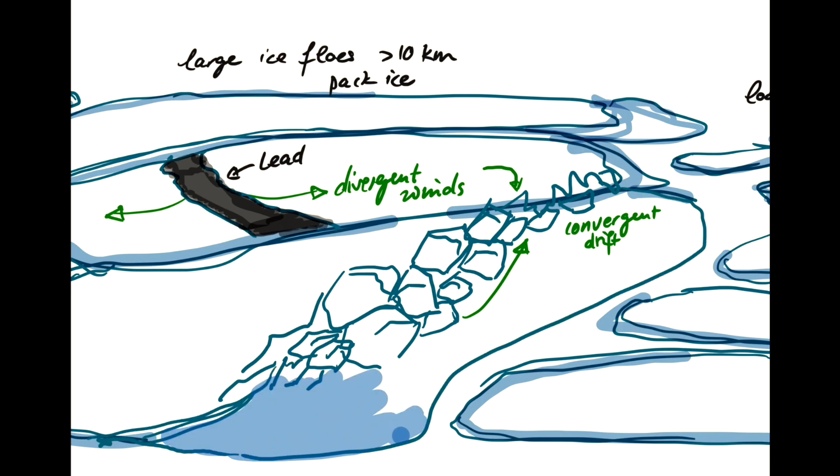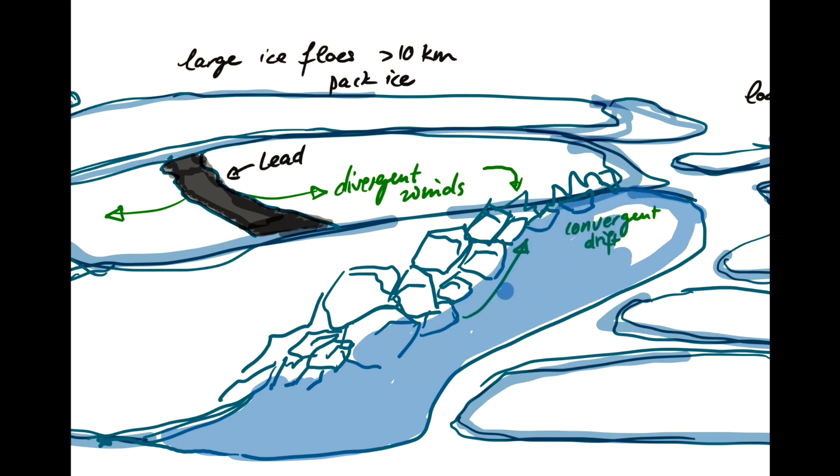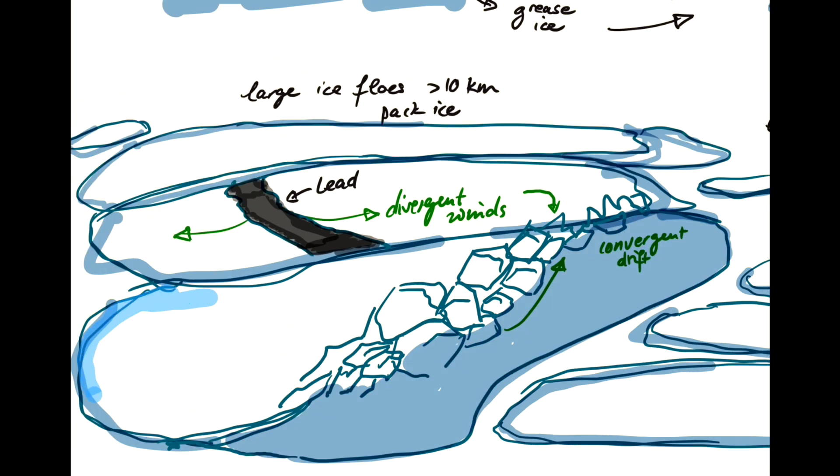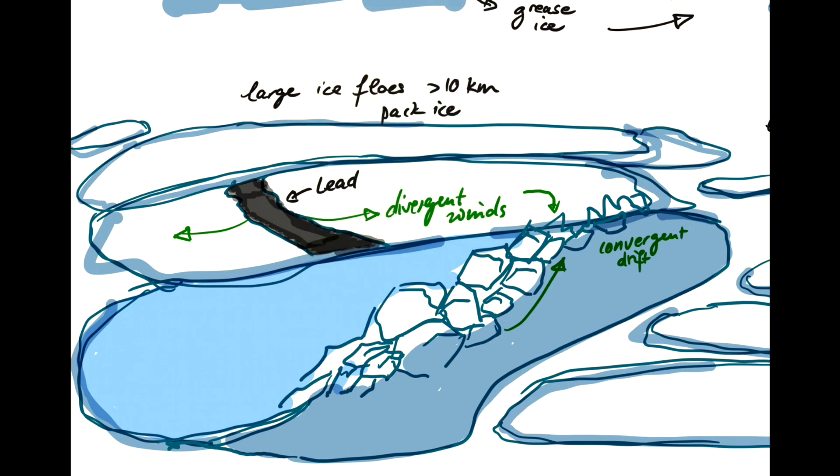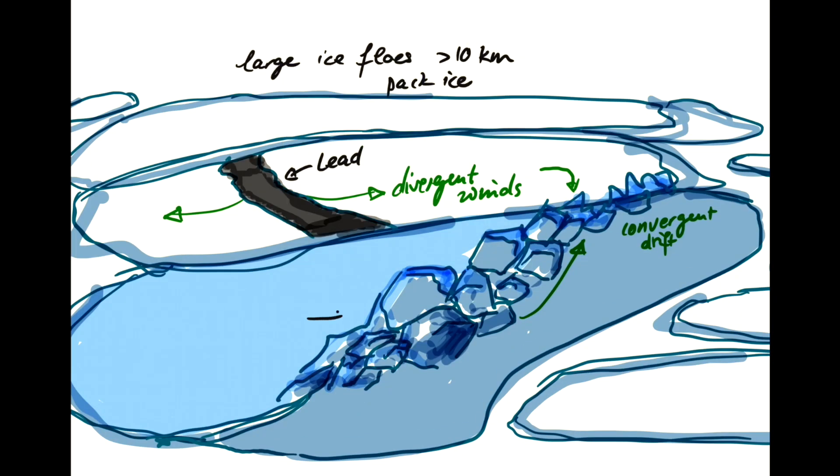And they always appear at the intersection of two previous flows that have been crushed together by wind and current forces. So this would be one ice flow here on one side and another one on the other side, originally. And the convergent conditions between those create these pressure ridges, one of which I've tried to illustrate here. So this is a so-called pressure ridge.